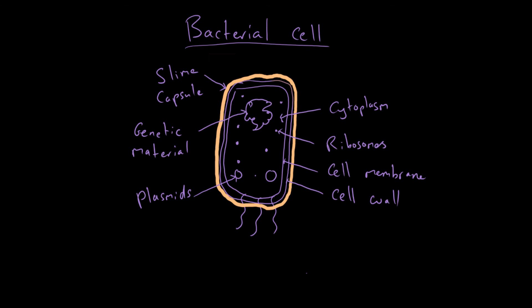The squiggly structures on the end are flagella - singular flagellum - which are tails that allow the bacteria to move. Bacteria exist as a single cell and need to move around, so the flagella allow them to do that. The bacterial cell is also much smaller than the other three cell types. Being able to label diagrams with the different organelles and features is something you definitely need to be able to do.